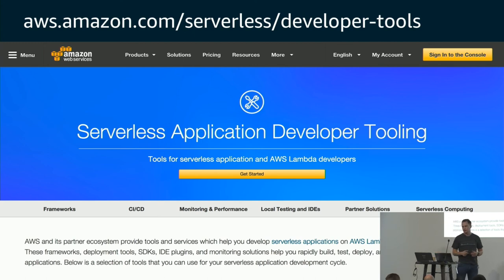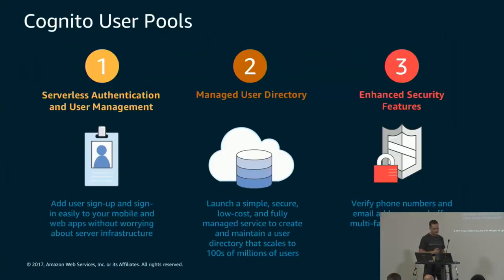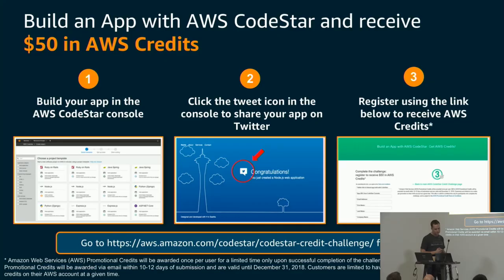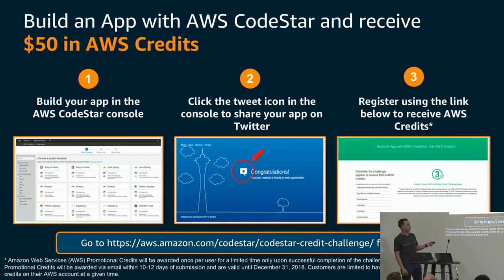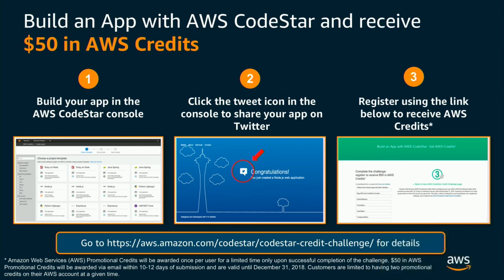There's also $50 in AWS credits available. If you use CodeStar and spin up that same example, click the tweet link — it creates a tweet saying 'I've just created my first serverless application' — pop that in a form and you get $50 free AWS credits just for experimenting. Experimentation is good!